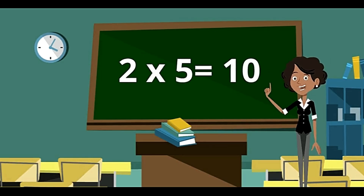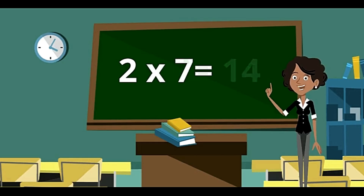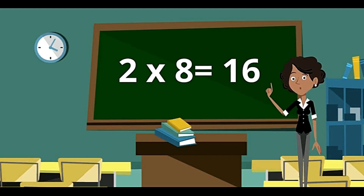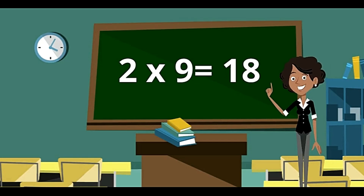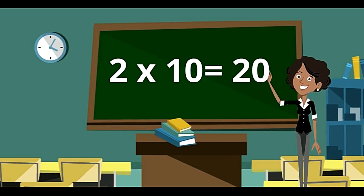2 fives are 10. 2 sixes are 12. 2 sevens are 14. 2 eights are 16. 2 nines are 18. 2 tens are 20.